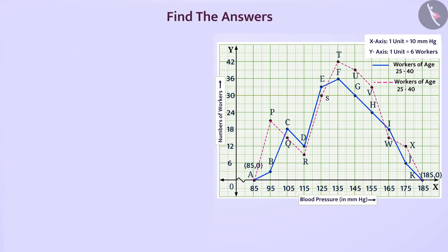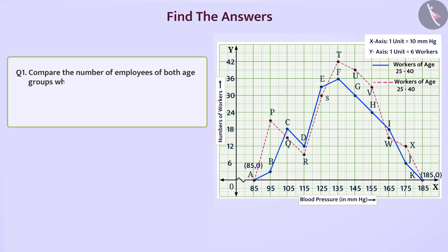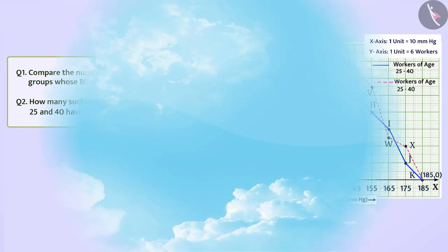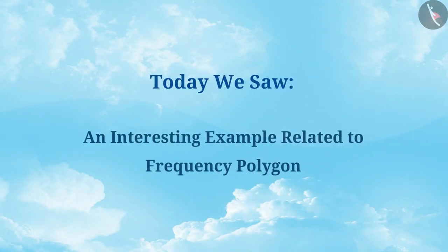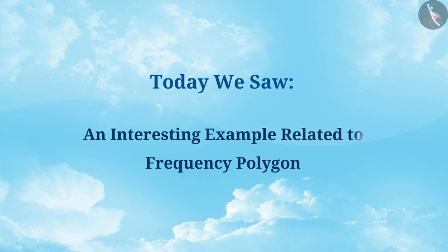Now, find the answers to the following questions yourself. Compare the number of employees of both age groups whose blood pressure is 105. How many such employees between the ages of 25 and 40 have blood pressure of 125? So, today we saw another interesting example related to frequency polygon.